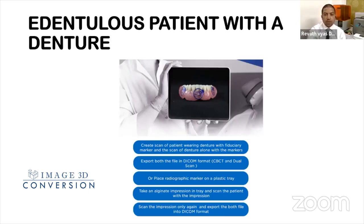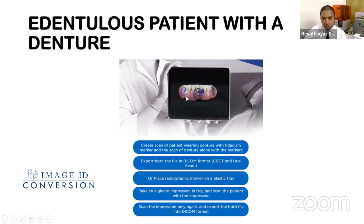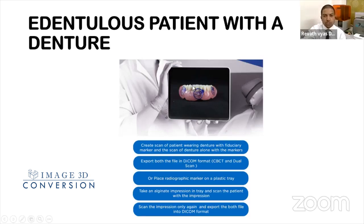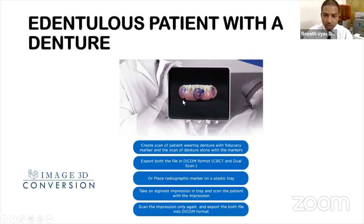In patients with a denture, place radiopaque markers at four to five locations on the denture. These fiduciary markers are available as stickers, or you can bond them, or make small holes in the denture and fill with zinc oxide eugenol or GP to act as radiopaque markers. Place the denture in the patient's mouth in occlusion for the scan, then scan the denture separately. The denture's intaglio surface gives soft tissue data, and the denture in the patient's mouth gives hard tissue data with markers.